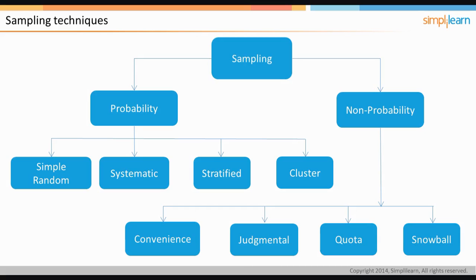Finally, we have snowball sampling. In this, the initial group of respondents are selected, usually at random or from contacts of the existing customers. They are used in studies that involve customers that are hard to find.